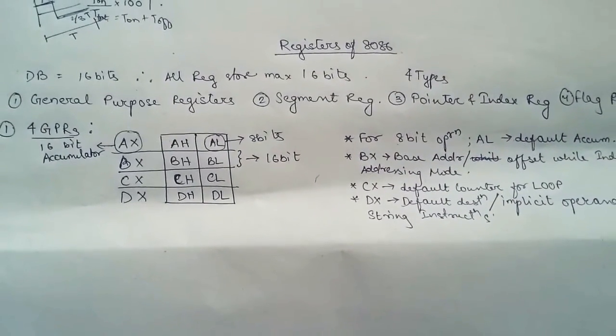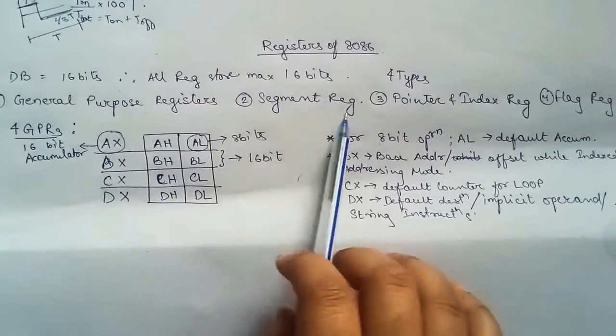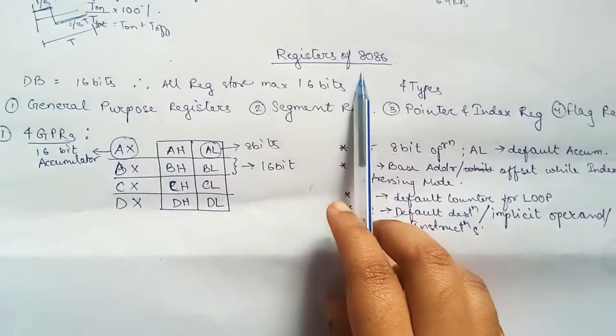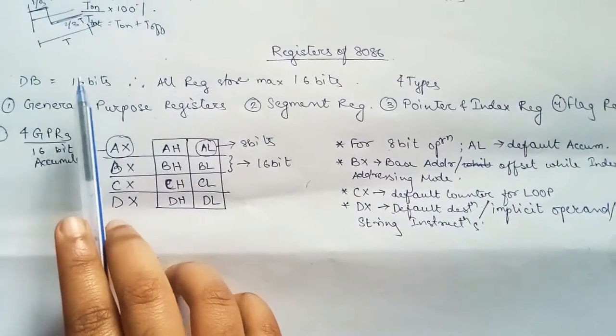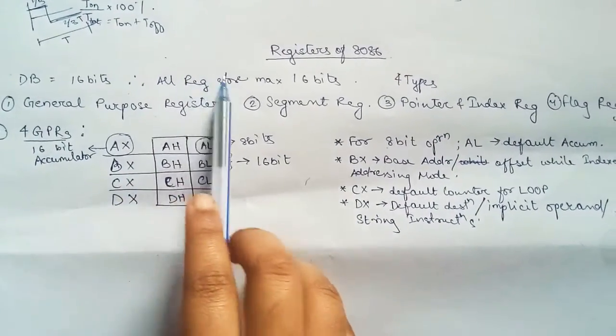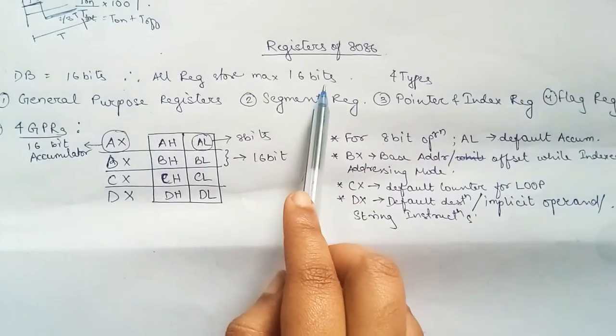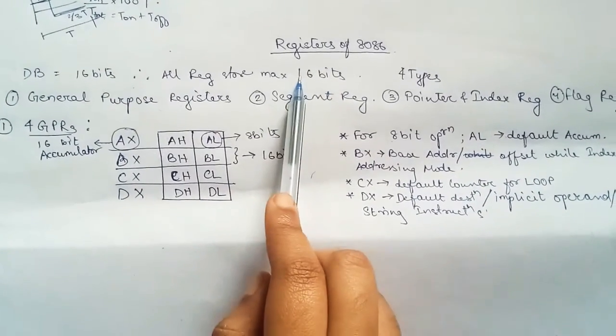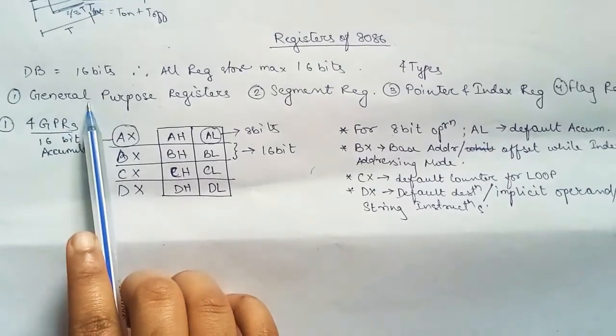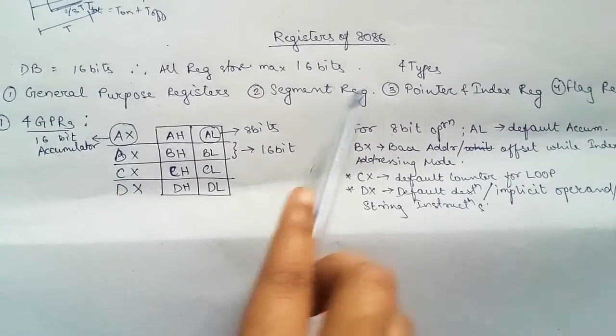Registers of 8086. We have four types of registers in 8086. Since the data bus is 16 bits, therefore all the registers can store a maximum of 16 bits of data. So we have four types: general purpose registers, segment registers, pointer and index registers, and flag registers.